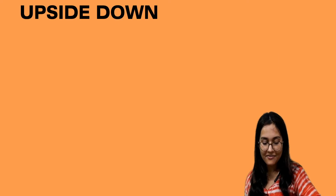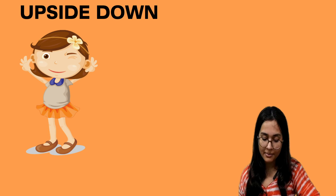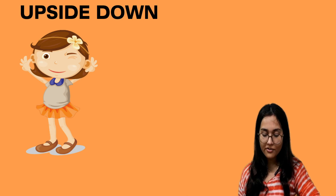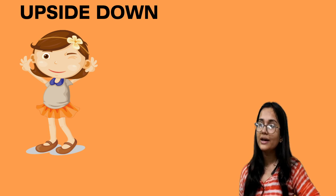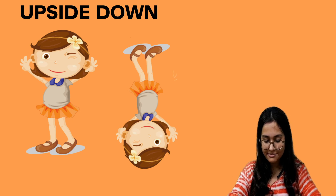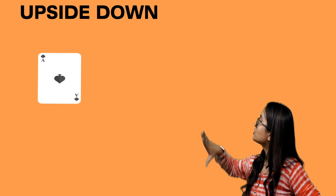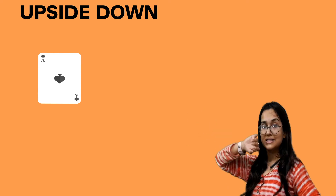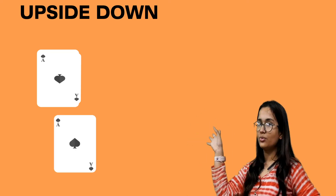Then we have an upside down activity. Anisha is playing a game and showing her friends that she can stand on her head. She plays with a card — you need to draw what it looks like when it's turned upside down. When the card is flipped upside down, it looks like this.